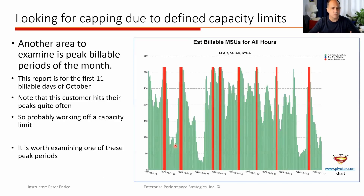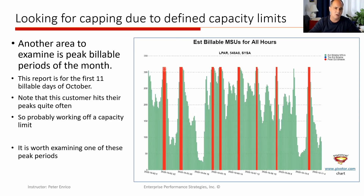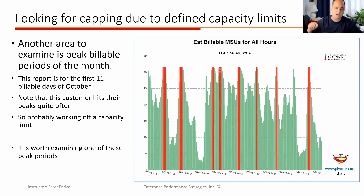Another indicator of latent demand is when you look at your peaks for the month. If you're still doing your pricing on the peak of the month, what I'm trying to show you here — I think this is about 11 days worth of data — is our estimated billable MSUs, where the red areas are our intervals where we hit our peak, our maximum MSUs available for this particular LPAR. If I was looking at this over time, I would probably see latent demand during the periods of time that this LPAR was limited by its peak of the month, whatever that may be caused by — a cap, or just the limitations of the machine. The peak of the month, when you see it flatlining, indicates some sort of latent demand activity.